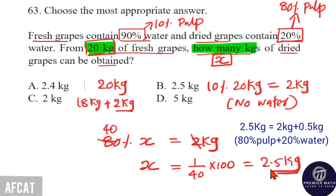And this dried grape contains 2 kg pulp. That is, pulp means grape without water. So, remaining 0.5 kg is water. So, option B is your answer.